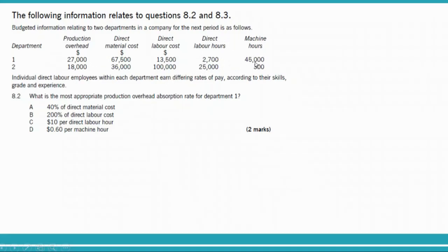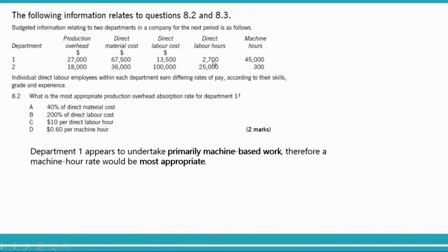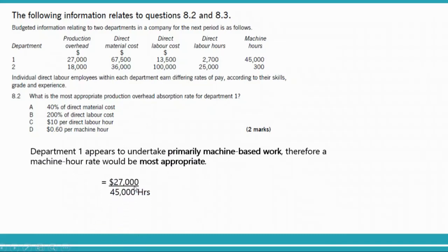Department one appears to undertake primarily machine-based work because there are more machine hours, so a machine hour rate is most appropriate. The answer is $27,000 divided by 45,000 hours, which equals $0.60 per machine hour. The answer is option D.